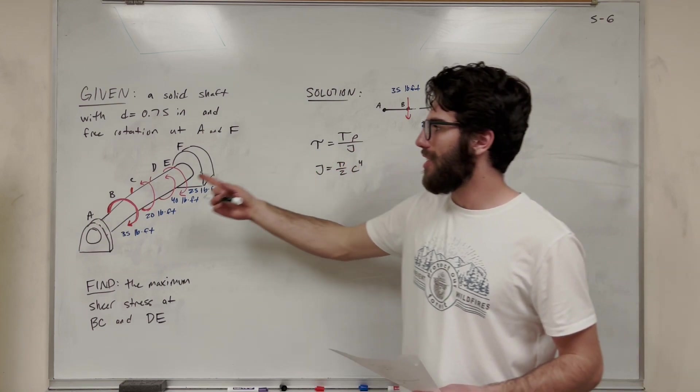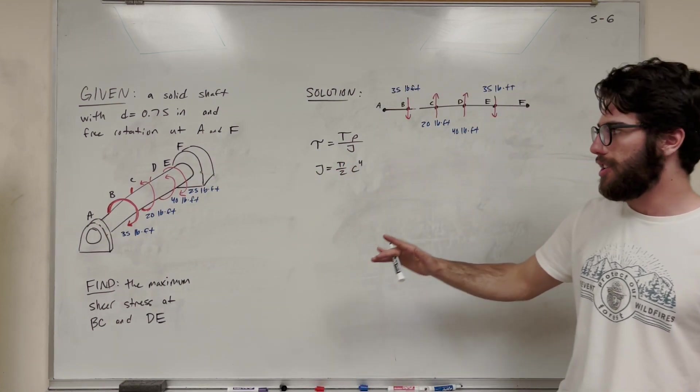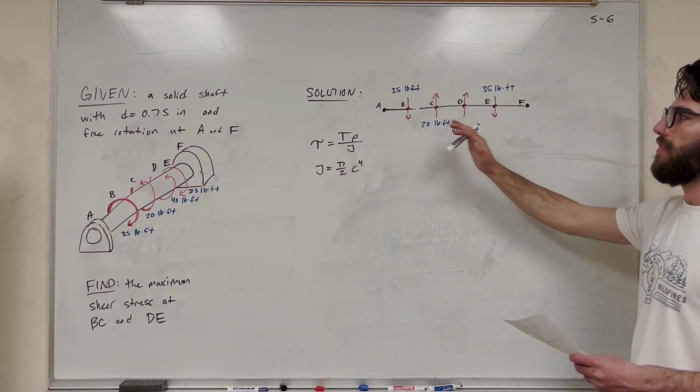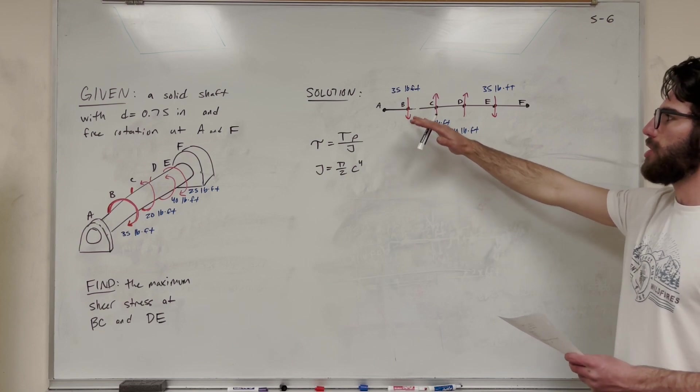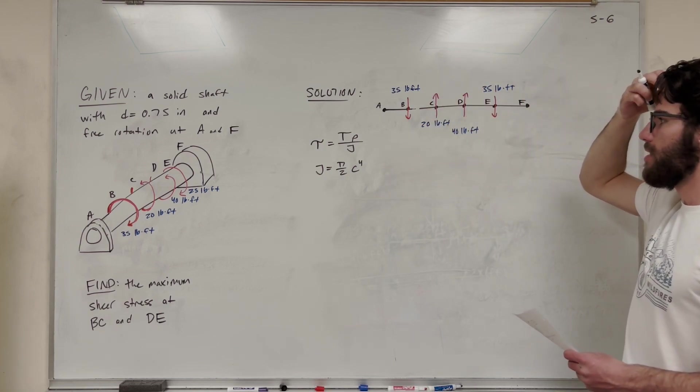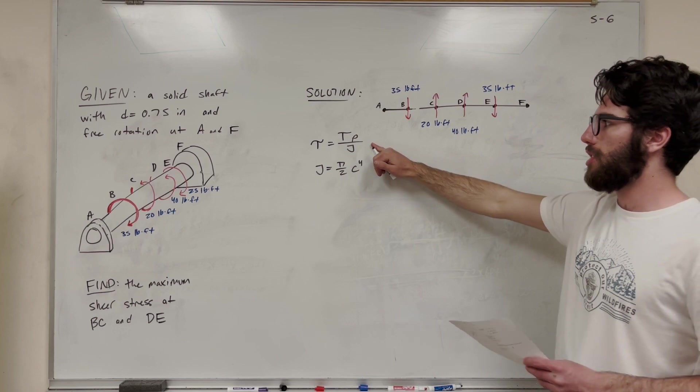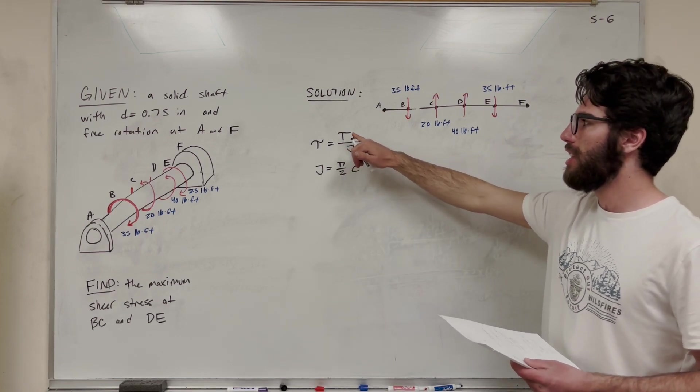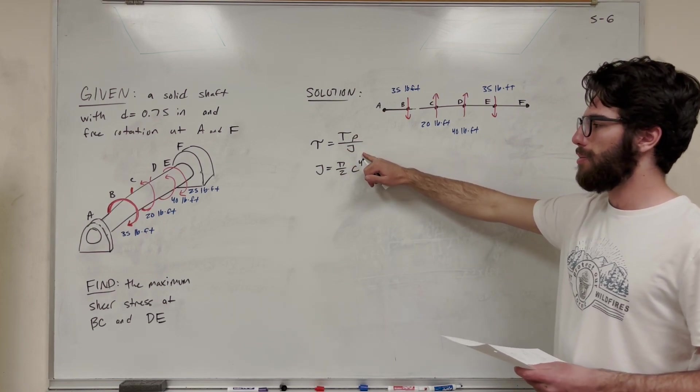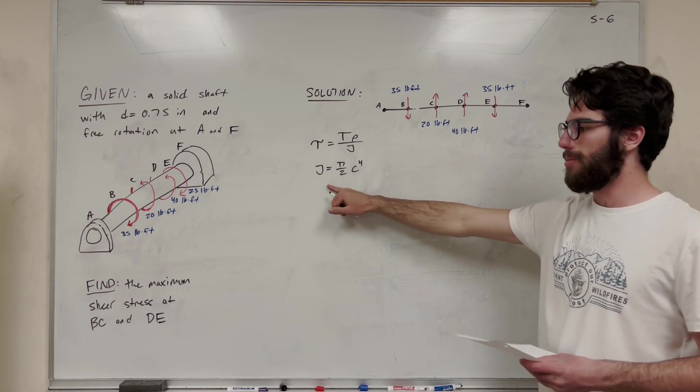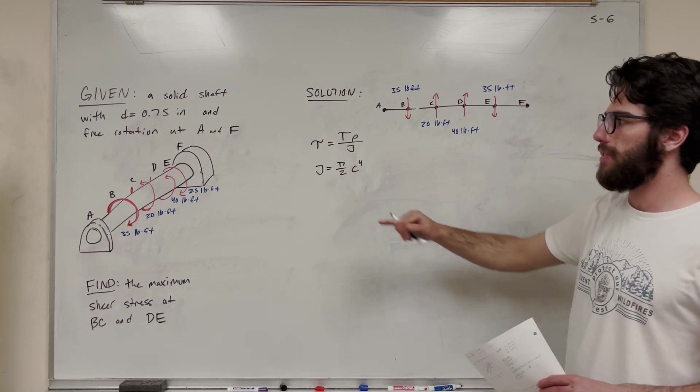My diagram is a little hard to see so hopefully the image is doing a good job but I also drew this flat view where you can see which ones are looking which way. So we're going to be using our two equations. Our shear stress is equal to our internal torque times our distance over the polar moment of inertia and then our polar moment of inertia is equal to this for a solid shaft.